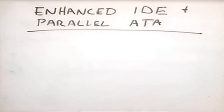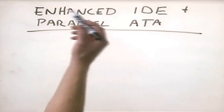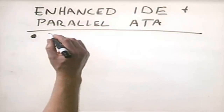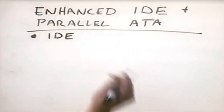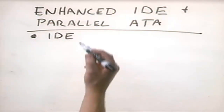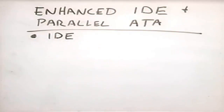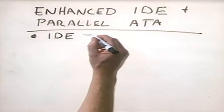Let's talk about storage interfaces. In this lesson we're going to talk about the different ways that we can connect hard disk drives to the motherboard in our PC system. Let's start with the enhanced IDE parallel ATA standard. Both of these descend from an original specification that's quite old called the IDE specification. IDE was an early standard that was used to connect hard disk drives to a motherboard system.